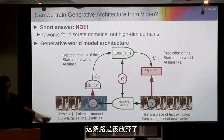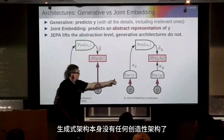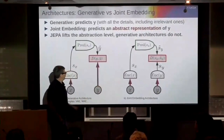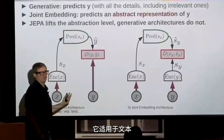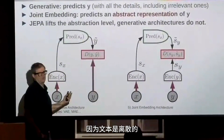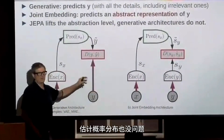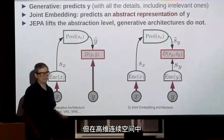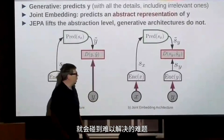So this needs to be abandoned — generative architectures in predictive architectures. I think we should just drop this for high-dimensional continuous inputs. It works for text because text is discrete, so you can make predictions in discrete domains and estimate distributions. But in high-dimensional continuous space, we hit this intractable issue.